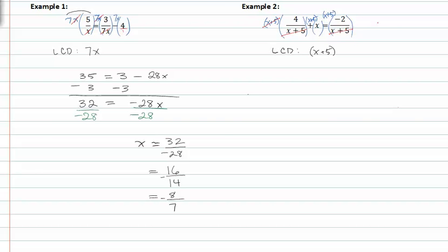But the x plus five here divides with the x plus five there. So our new equation now that we've cleared our denominators is four plus x times x plus five equals negative two.